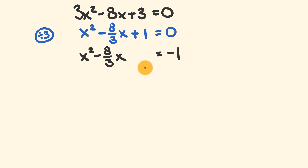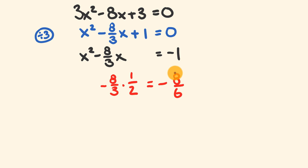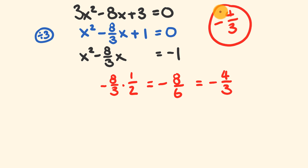Now we're going to work out what we put into that space — this is the process to complete the square. There are two little steps. First, we look at the coefficient in front of x, which is negative 8 over 3. We multiply that by half: negative 8 times 1 over 3 times 2 gives us negative 8 over 6. Simplifying — 2 goes into both — gives us negative 4 over 3. It's worth jotting this value down for later use.